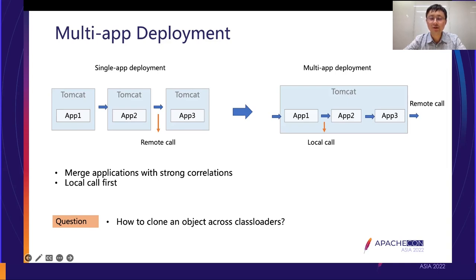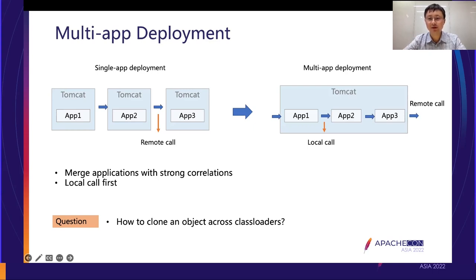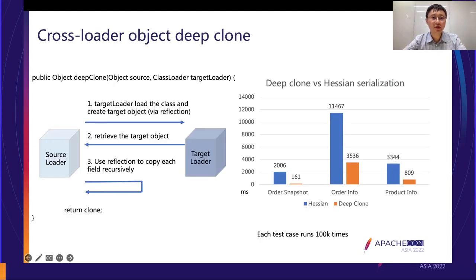When application one wants to call a method in application two, we check whether a local version of application two exists. If it does, we automatically convert the remote call to a local call by modifying the RPC framework. The challenge is that application one and two are loaded by different class loaders, so to copy an object across class loaders we use object deep clone. When doing a remote call, we normally use object serialization and deserialization, but across class loaders we need a different approach.